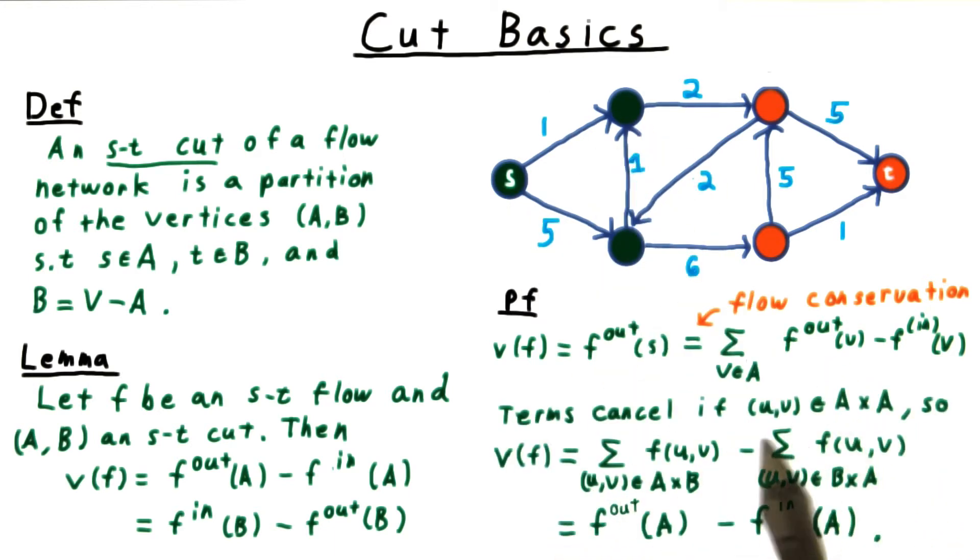For every edge where both vertices are in A, the terms simply cancel, because it will appear once here and once here. So we're left with the value of the flow as being the sum of the flows over edges between A and B minus the sum of the flows over edges between B and A. But this is just the flow out of A minus the flow into A, which of course is exactly what we wanted to prove.